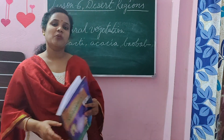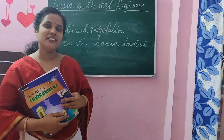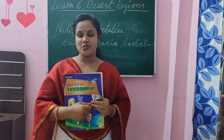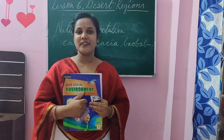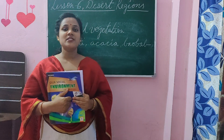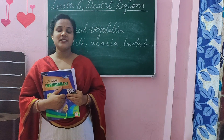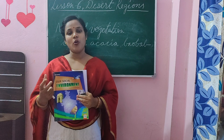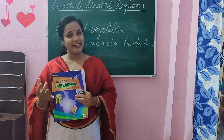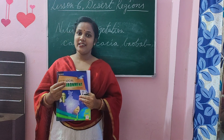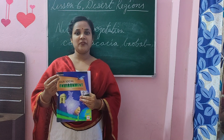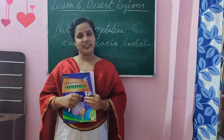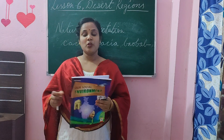We have already studied some of the features of Desert Regions, so quickly we will revise. We have learnt that a Desert Region is any hot or cold land area which gets less than 25 cm of rainfall.